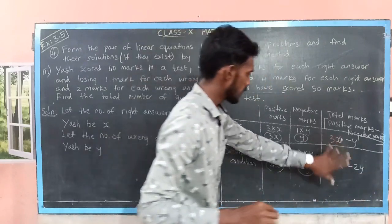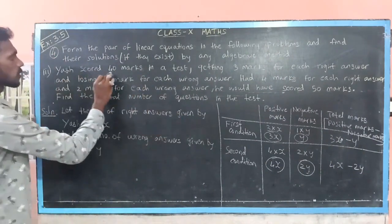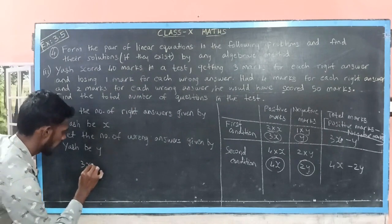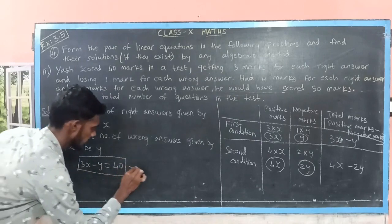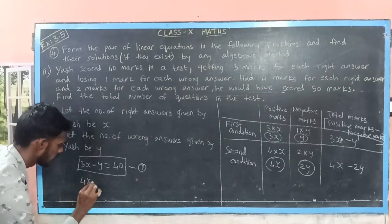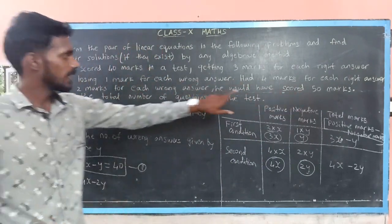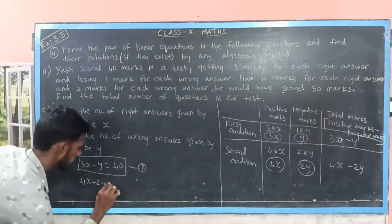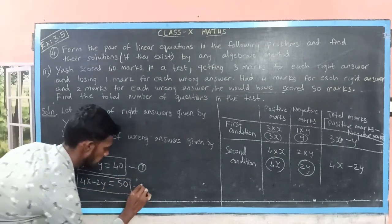We are going to equate these expressions with the given conditions. In the first condition Yash scored 40 marks, so 3x minus y equals 40 — this is equation 1. In the second condition he would have scored 50 marks, so 4x minus 2y equals 50 — mark it as equation 2.